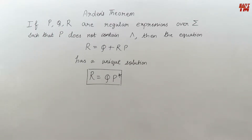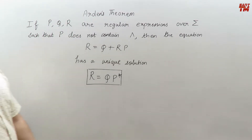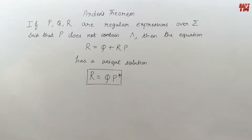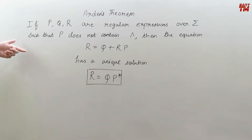Let's discuss Arden's theorem and the proof of Arden's theorem. We have already discussed this theorem in our previous videos, learned the identities related to it, and used it in numericals. Let's quickly revise the theorem and then move on to the proof. Arden's theorem states that if P, Q, R are regular expressions over sigma, where sigma is an alphabet containing input symbols, such that P does not contain null, then the equation R equals Q plus RP has a unique solution R equals QP-closure.